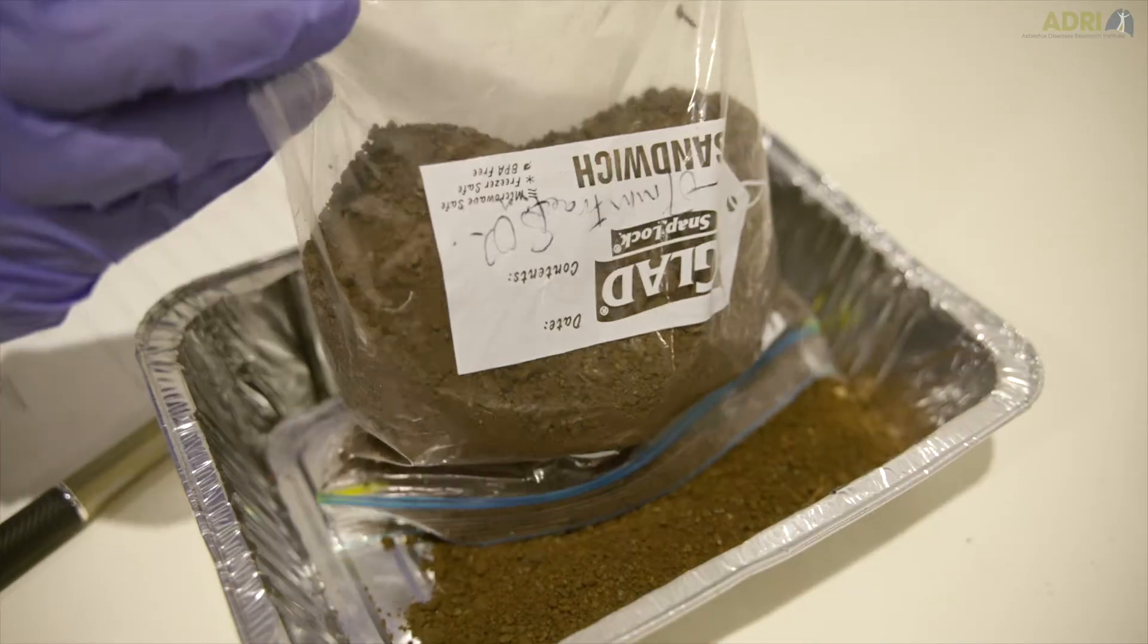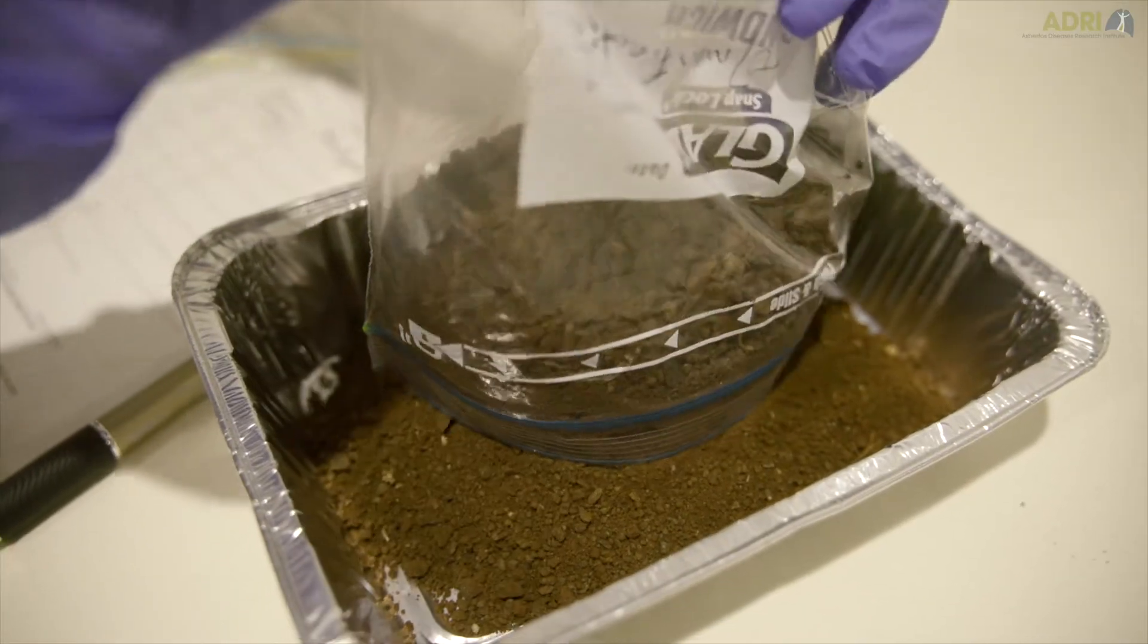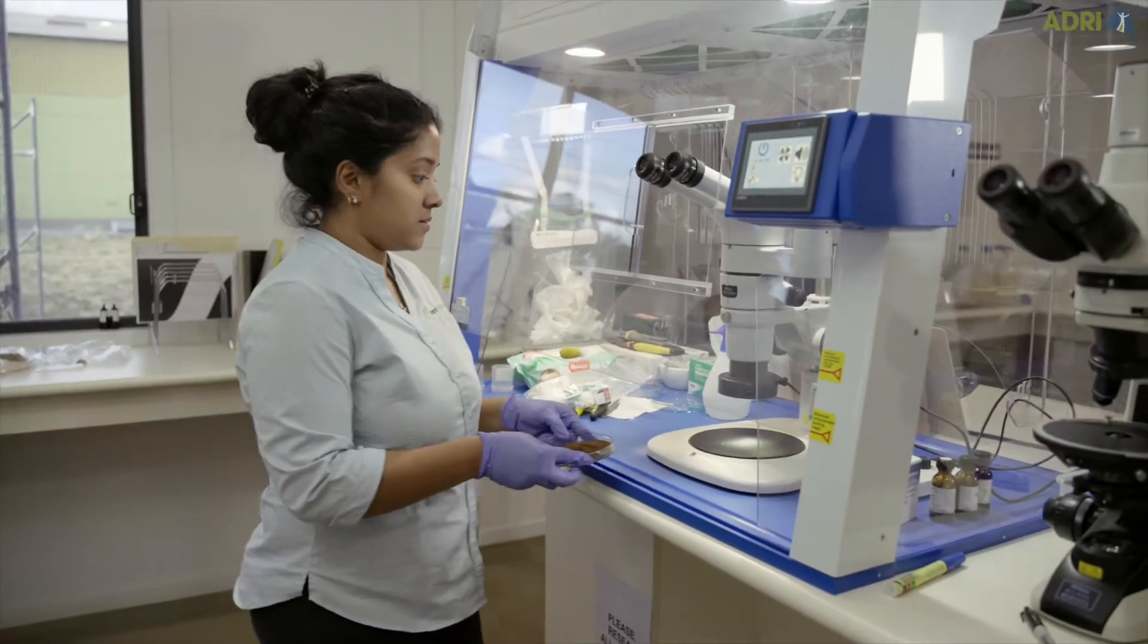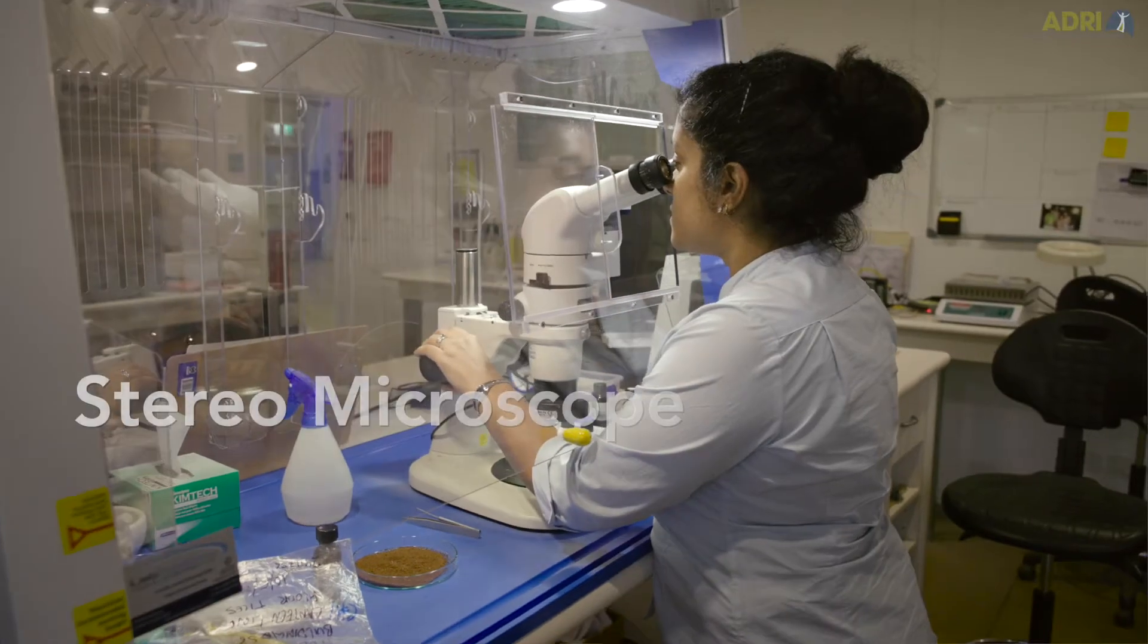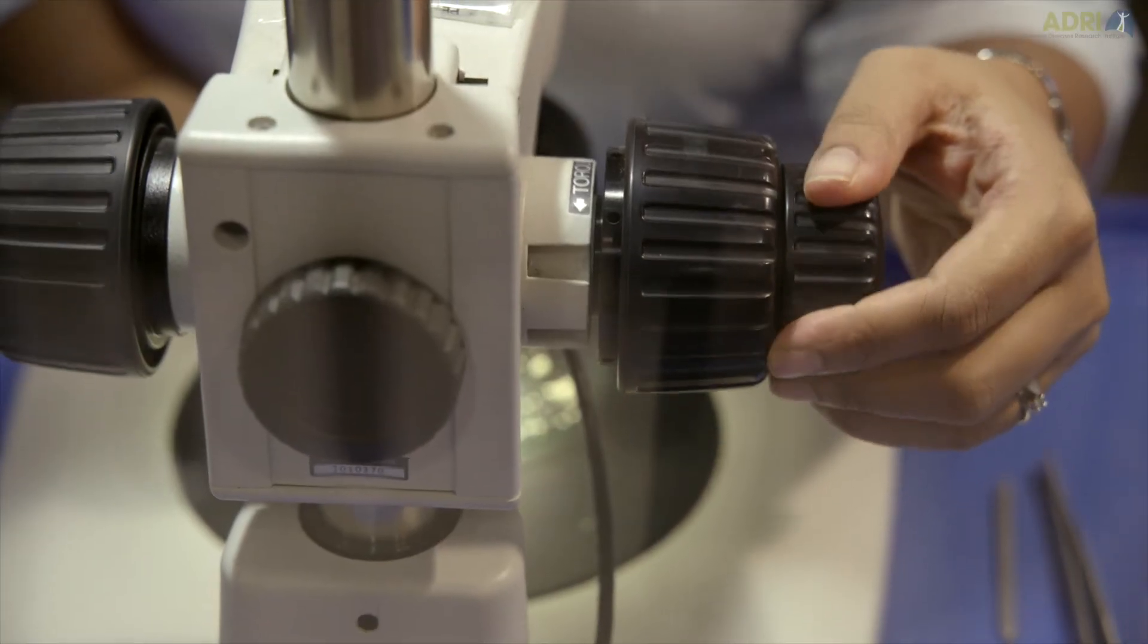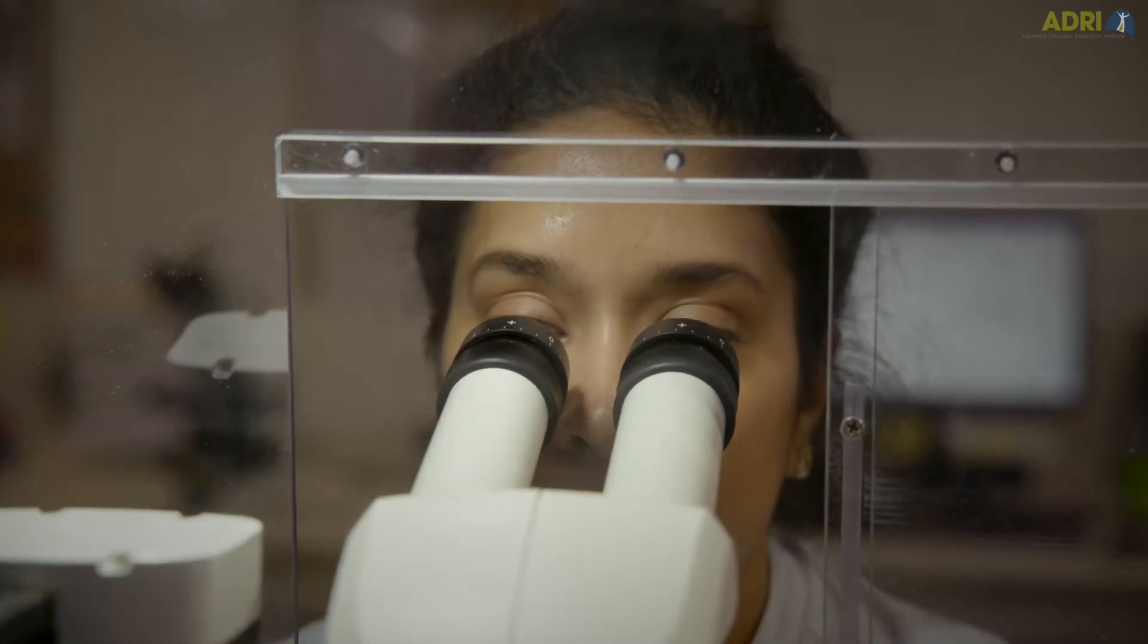The next stage of the receipt of the bulk samples, asbestos material to be tested for identification, they're then examined under low power or a stereo microscope in a petri dish under the fume hood again and that's probably the most important part of the analysis.